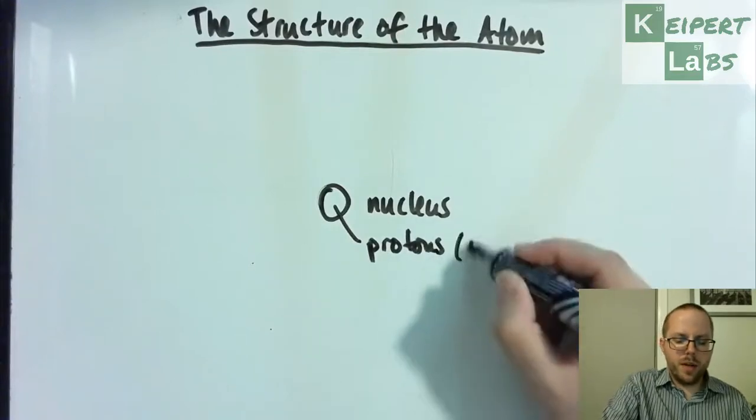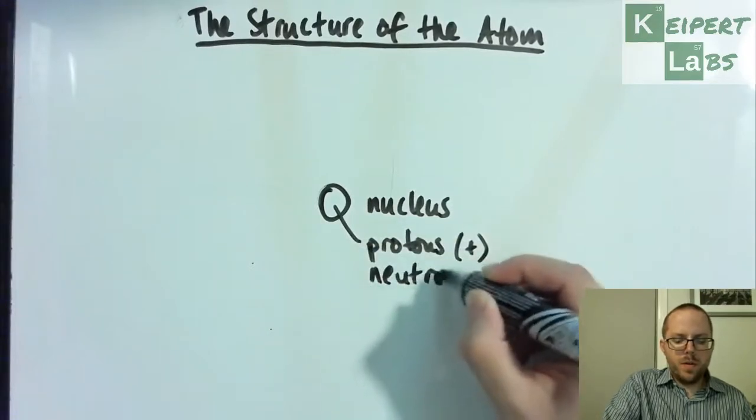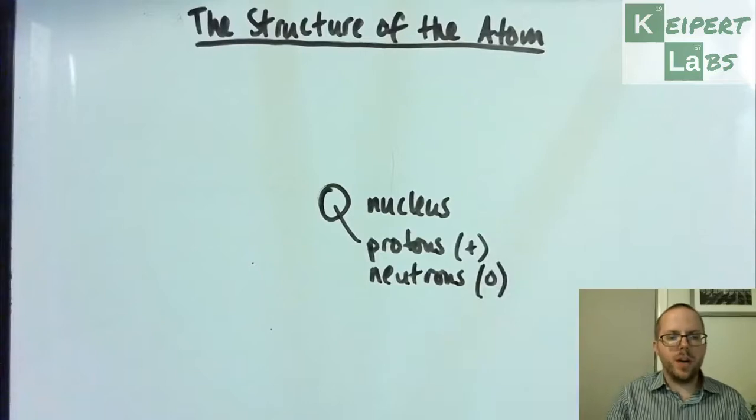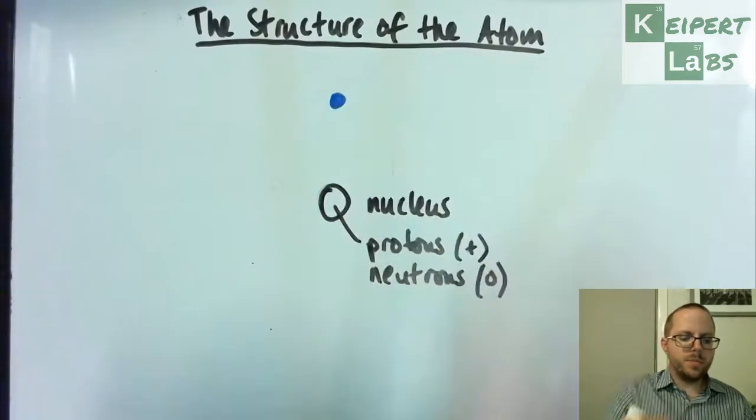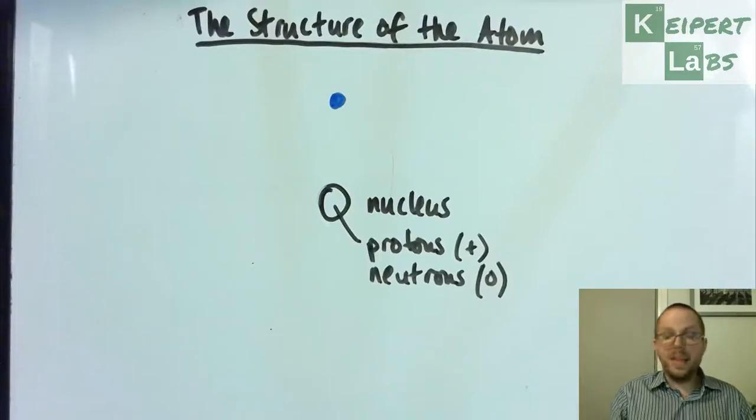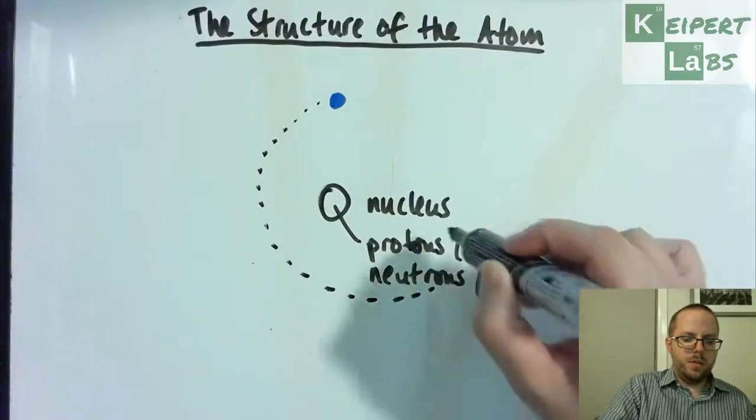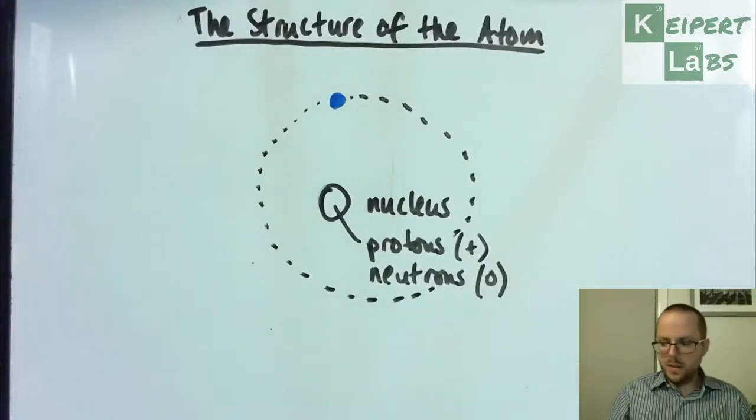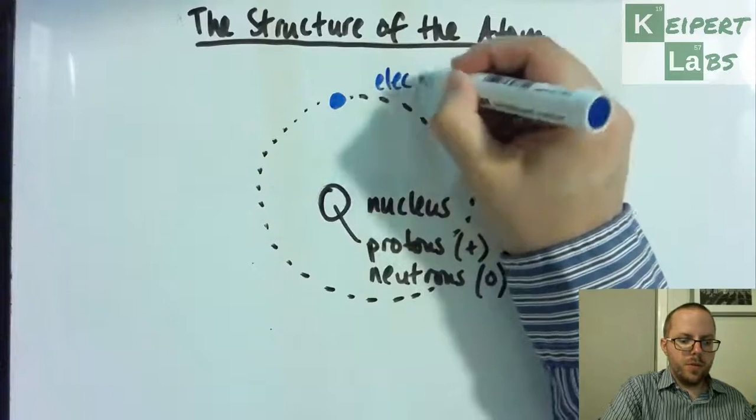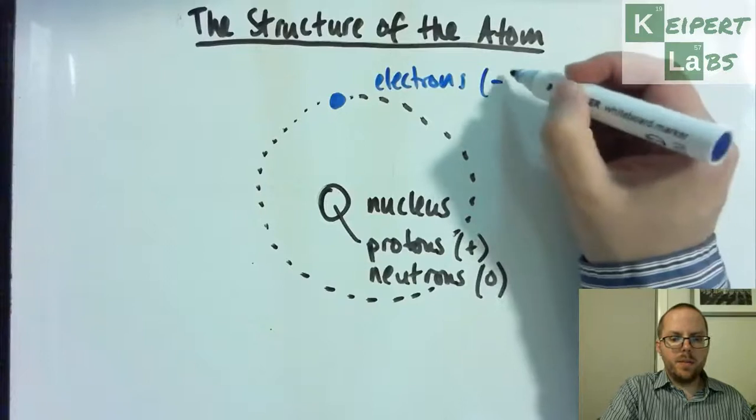Little particles called protons which have a positive charge, and neutrons which have a zero charge. And then around the outside, we have electrons. These electrons are orbiting around this nucleus. So this is where electrons would be, and they have a minus charge.